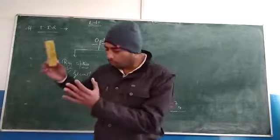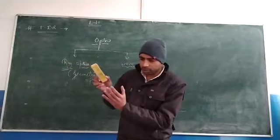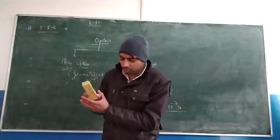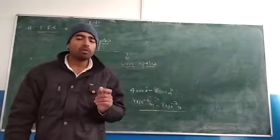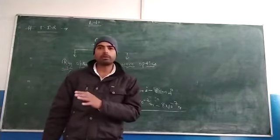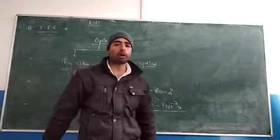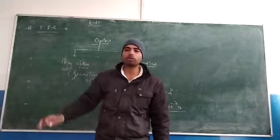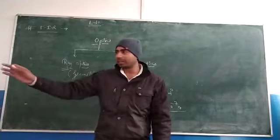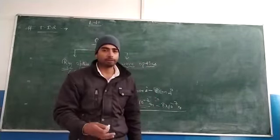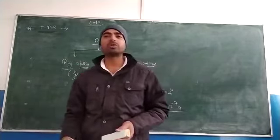अब suppose अगर मैं उस hole को छोटा करता जाऊं — पहले 10 cm था, धीरे-धीरे घटा रहा हूं, इतना छोटा कर दिया कि hole की dimensions, wavelength of light के comparable हो जाएं — यानी 10⁻⁷ meter की order का। अगर hole इतना छोटा हो गया, तो दूसरे room में brightness-darkness का pattern दिखेगा — यानी diffraction का pattern — जो wave optics में पढ़ते हैं।